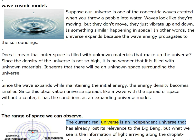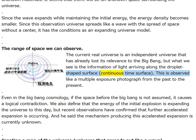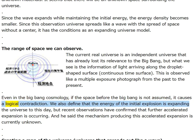The current real universe is an independent universe that has already lost its relevance to the big bang. But what we see is the information of light arriving along the droplet-shaped surface — the continuous time surface. This is observed like a multiple exposure photograph from the past to the present.